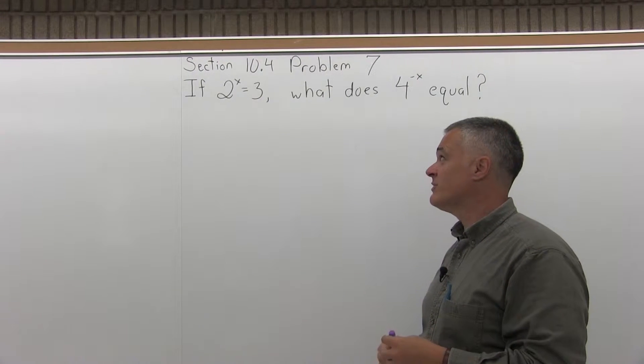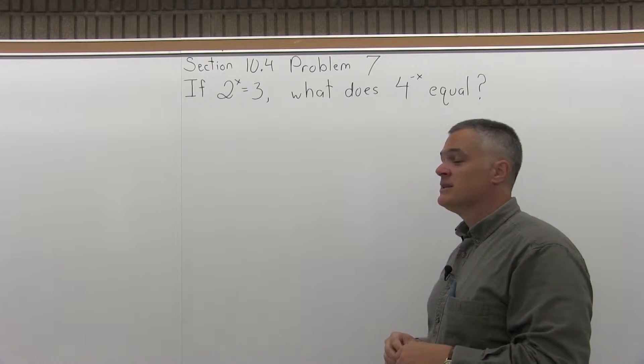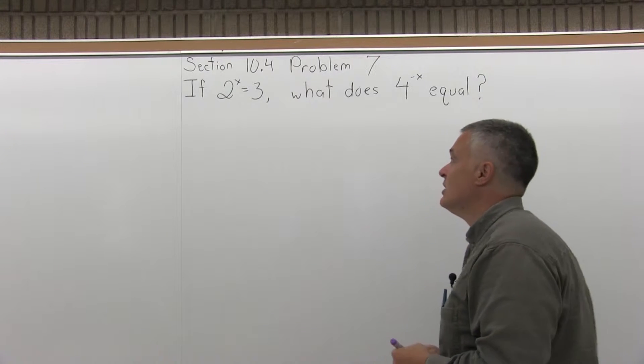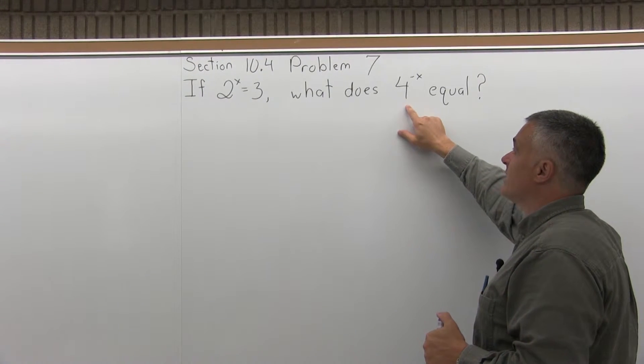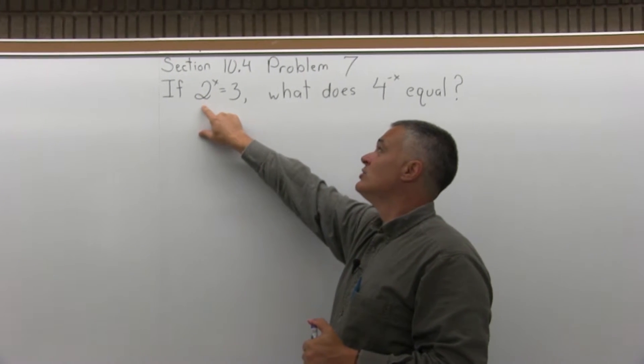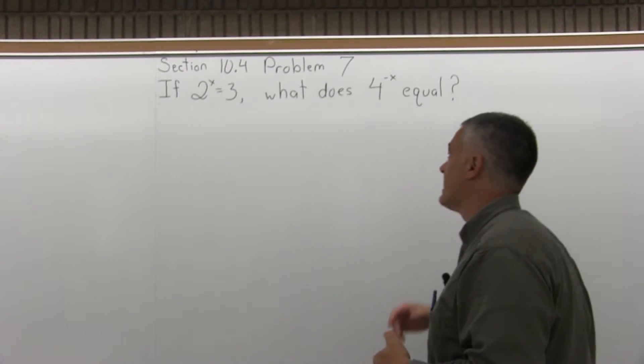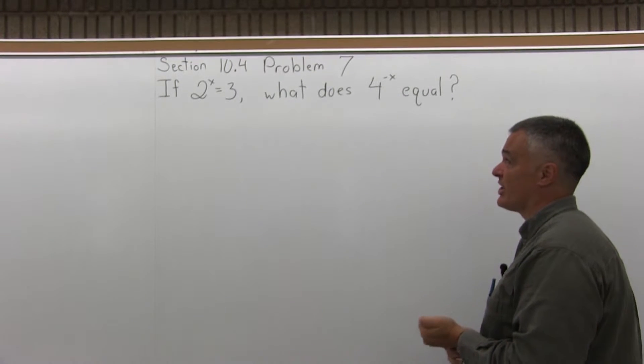That was the trick to the previous problem, number 6, but it doesn't seem to work for number 7. The other thing I can do is try to manipulate the 4 to the negative x so that I can turn this 2 to the x into something that I can make 4 to the negative x look like.